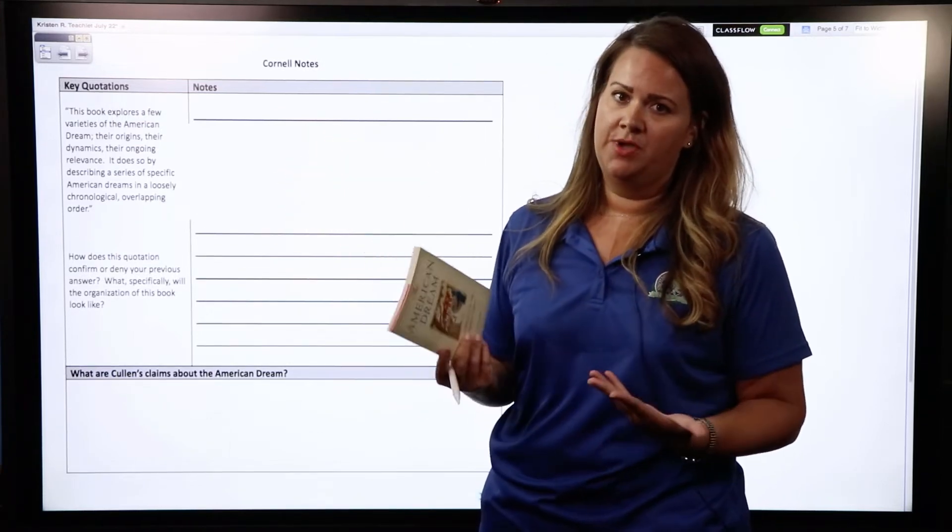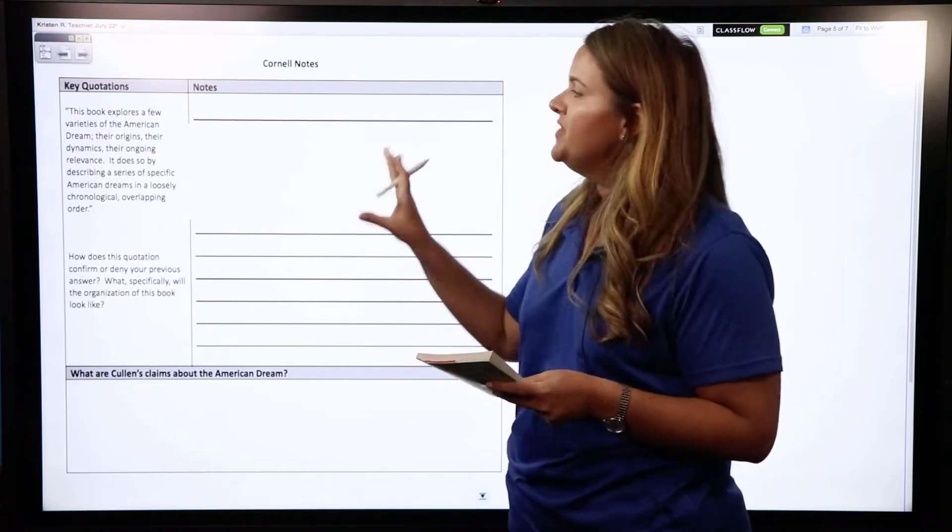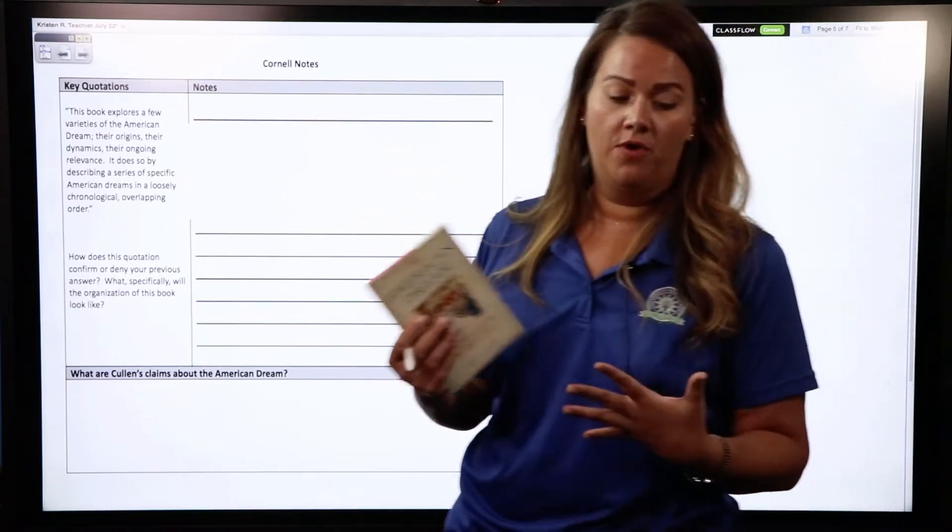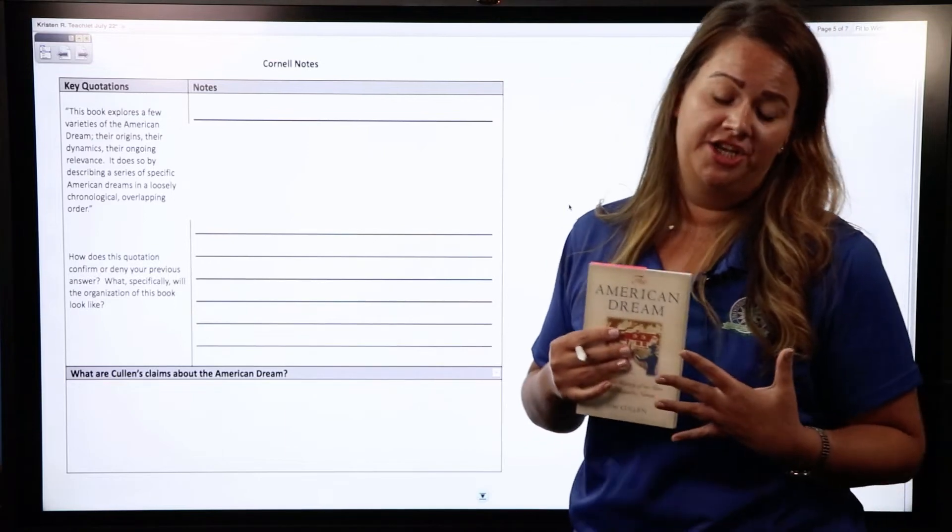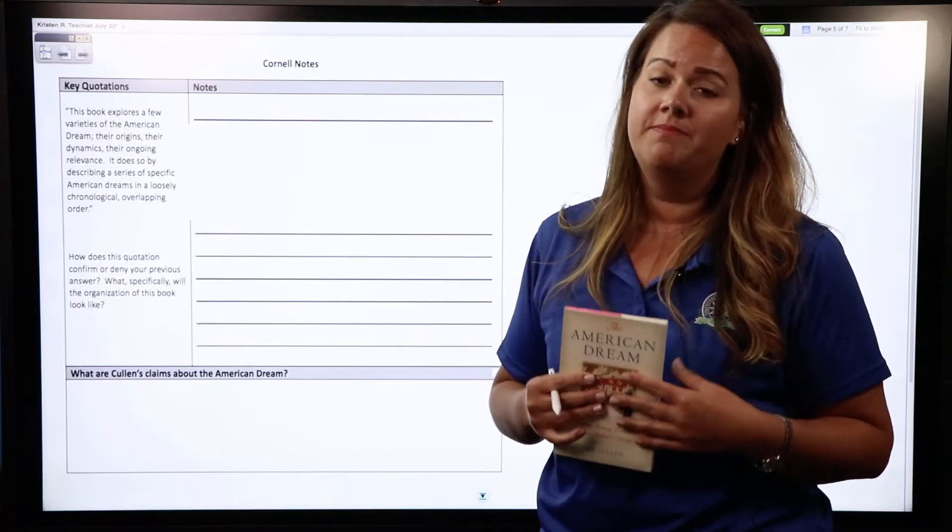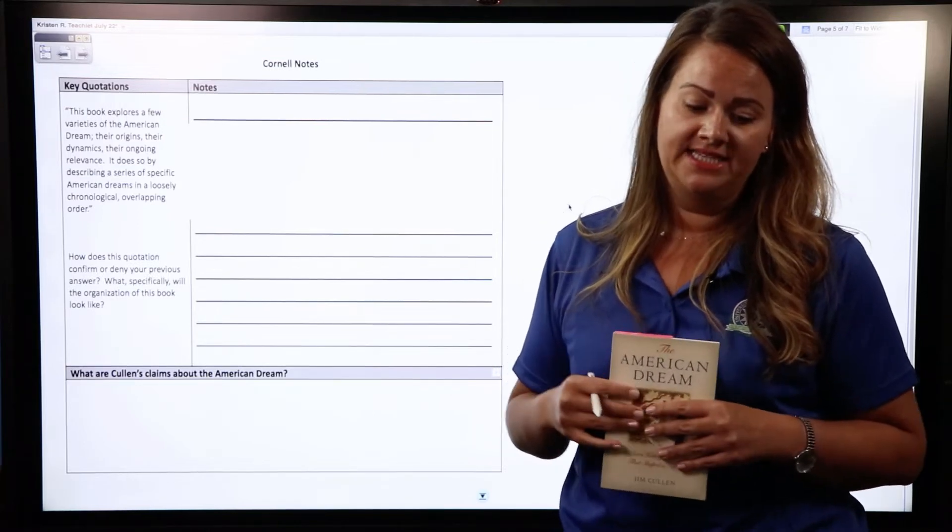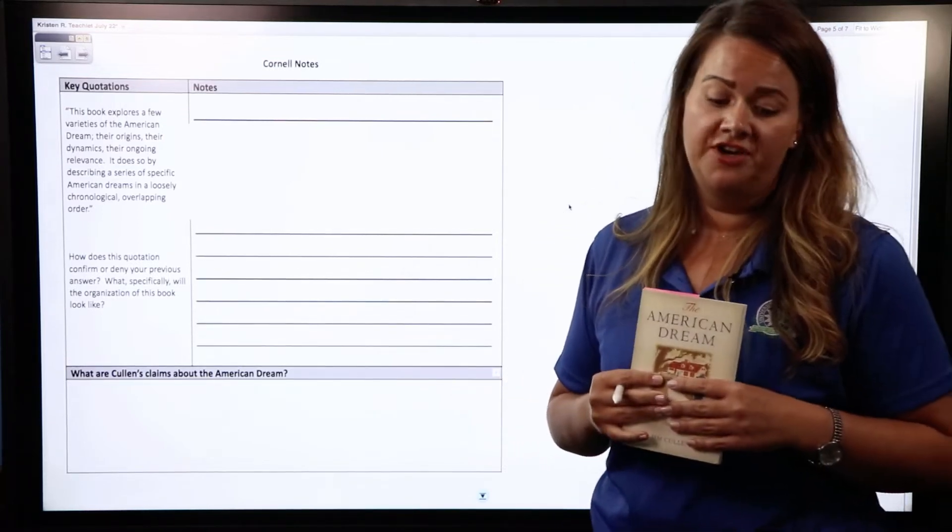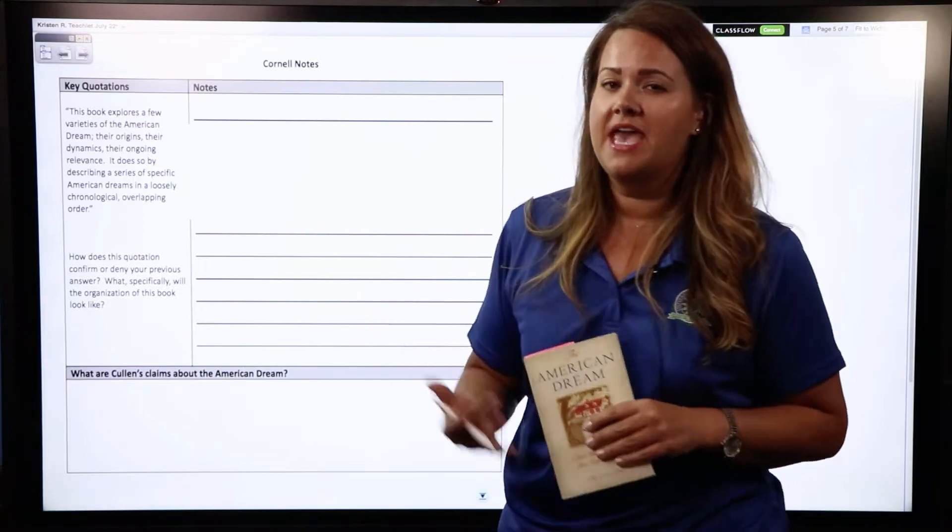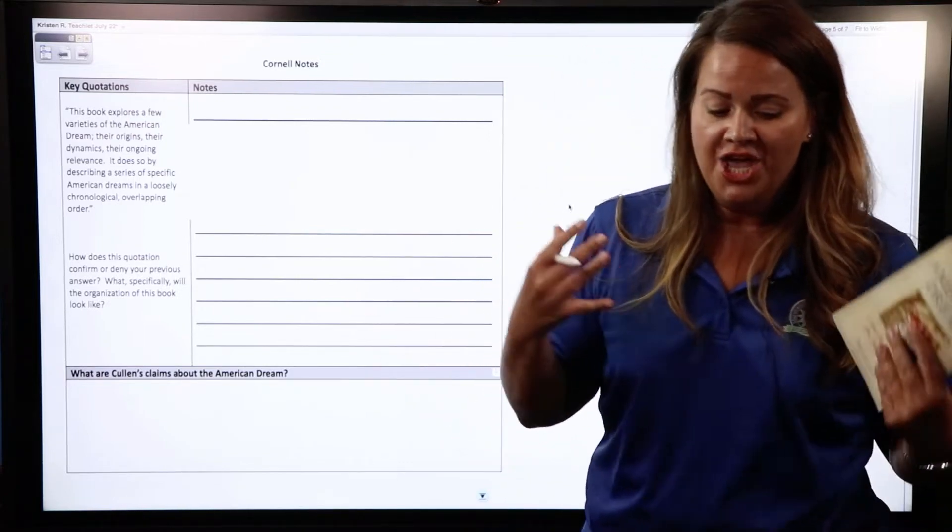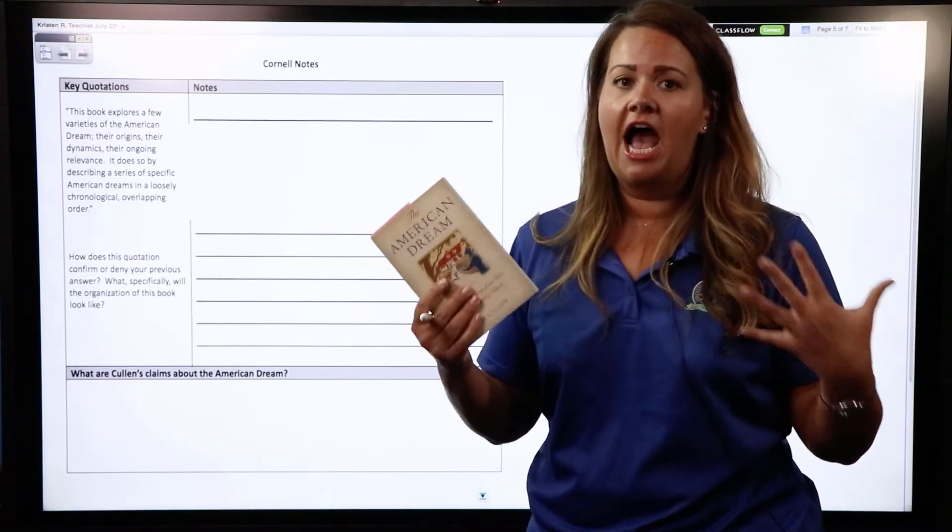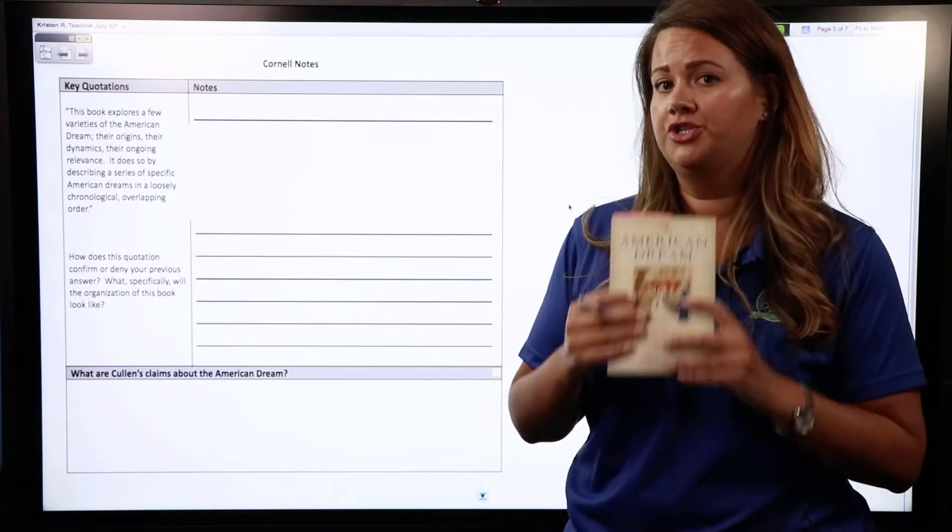So the quote that came before this states that there is no one American dream. Instead there are many American dreams, their appeal simultaneously resting on their variety and their specificity. And then based on that quote you were supposed to infer how you thought the author would structure this text.